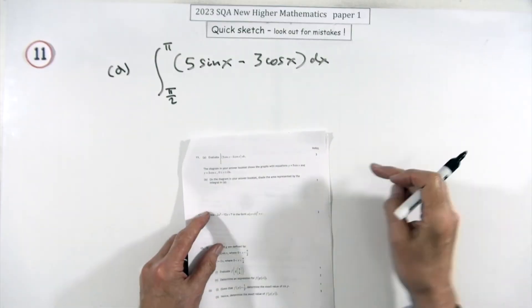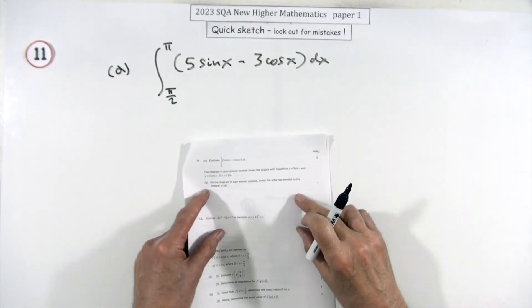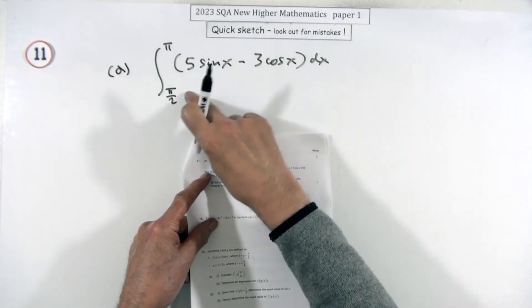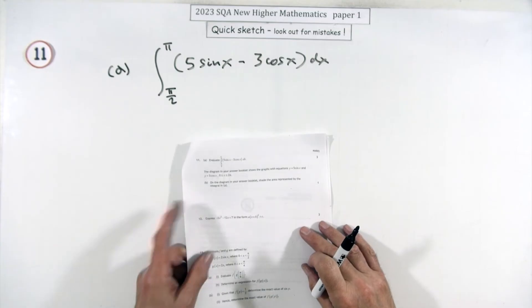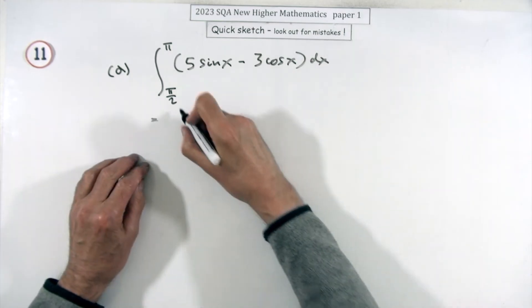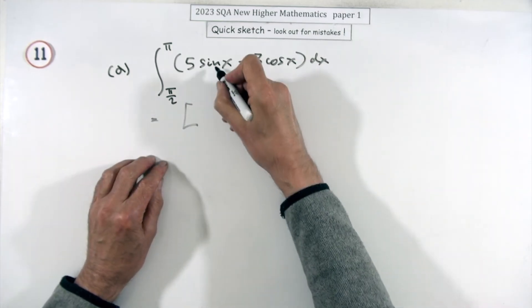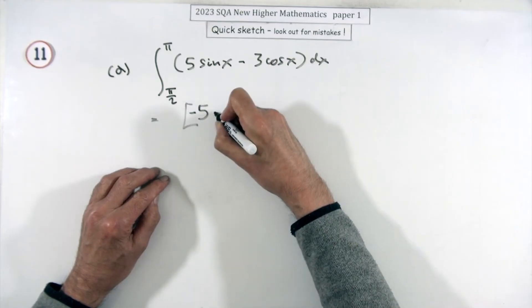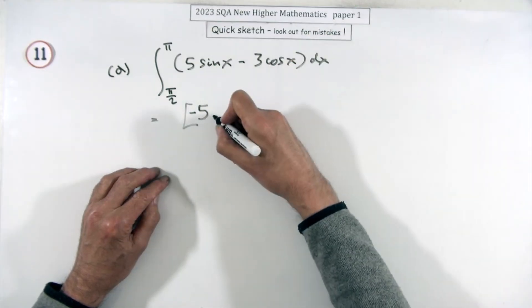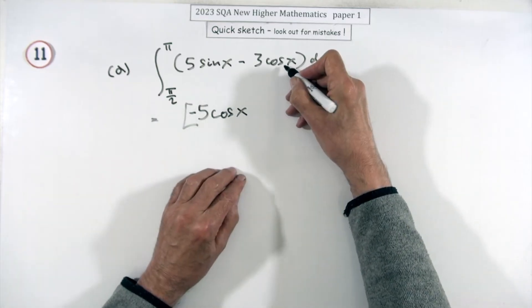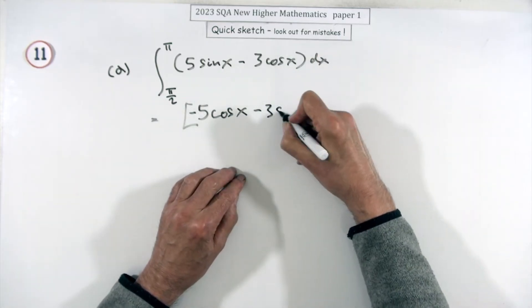Number 11 is worth four marks. Evaluate this definite integral involving trig functions. It's ready to go, so you can just go in with the evaluation. Sine goes back to cosine but with a negative because the derivative of cos is negative sine, so it's negative 5 cos x. Cosine goes back to sine, retaining the negative.